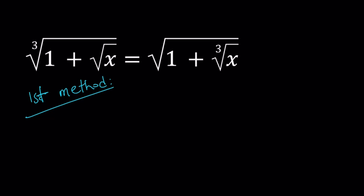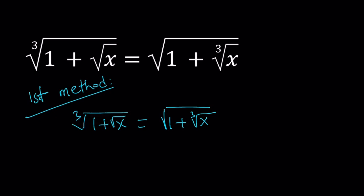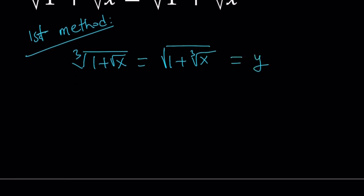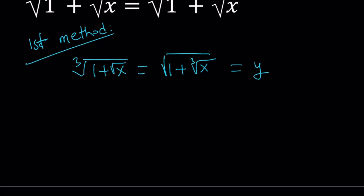For my first method, I'm going to set these equal to something. Substitution is a really cool method and we're going to use it. So let's go ahead and set both of these expressions equal to y. Now, after this we get two equations or a system of equations. We can go ahead and take the first one and cube both sides. That's going to give us 1 plus square root of x equals y cubed.